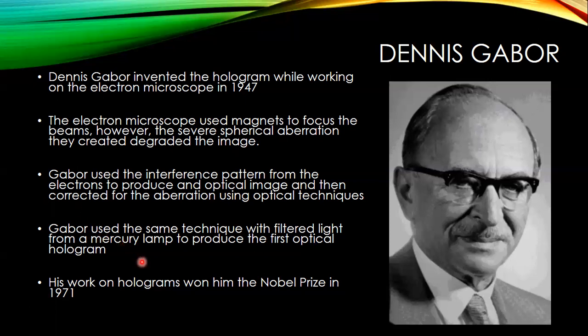His work on holograms won him the Nobel Prize in 1971. But at the time of Gabor's invention, the only way he could produce a hologram — and not of great quality — was to use line emission from a mercury lamp. Due to the limited coherence of the light, this was a very difficult thing to do.